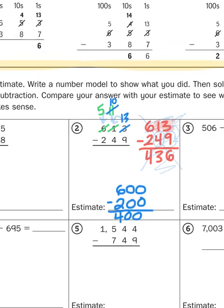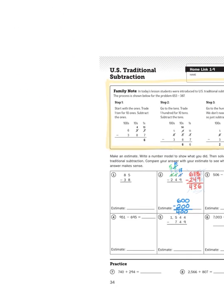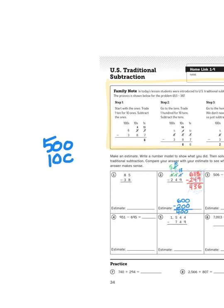So just a little sidebar right here. If I were to take 500 and add it to 10 10s, otherwise known as 100, if I were to add it to 13 1s, that would bring me back to my original total of 613. So 500 plus 100 plus 13 is just another way of expressing the value of 613.